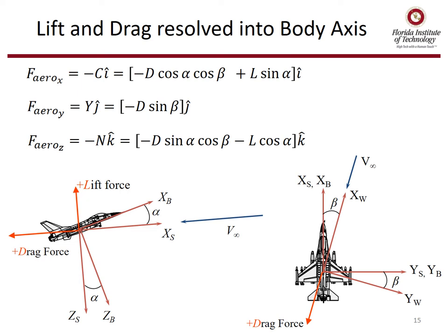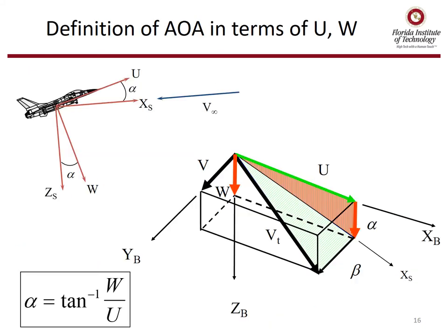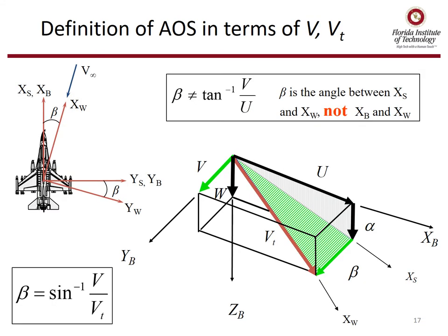Lift and drag can be resolved into the body axis system using angle of attack alpha, sideslip beta, and some trig. We can define AOA in terms of forward speed and downward speed — alpha is the inverse tangent of W over U. We can also define angle of sideslip beta, but we have to use V and true airspeed. The correct definition is the inverse sine of V over V-true.